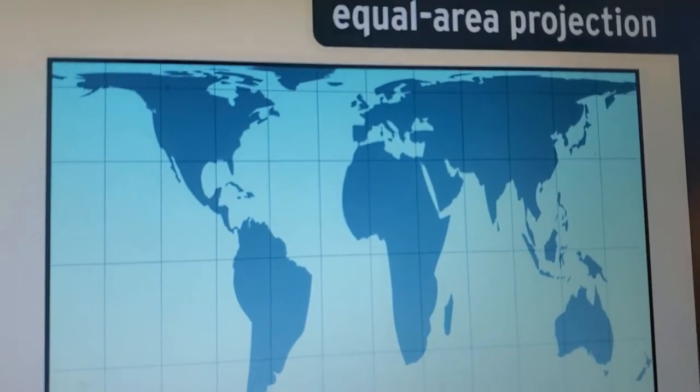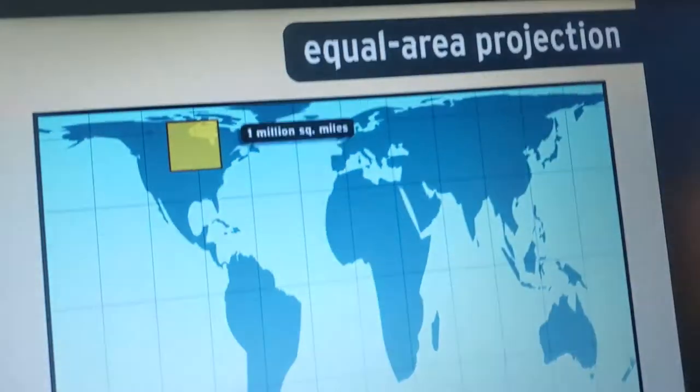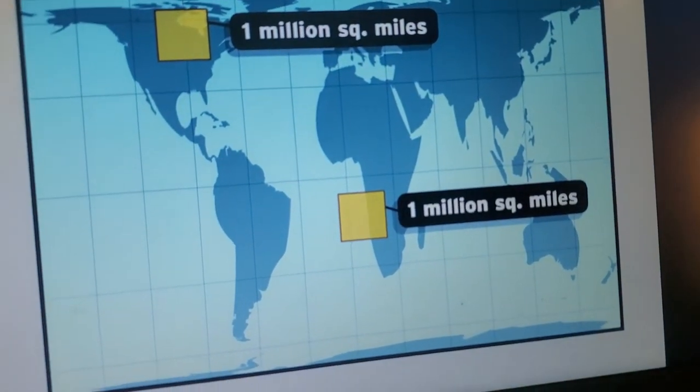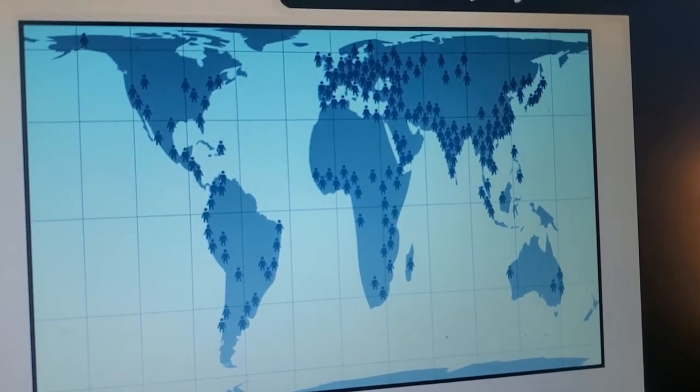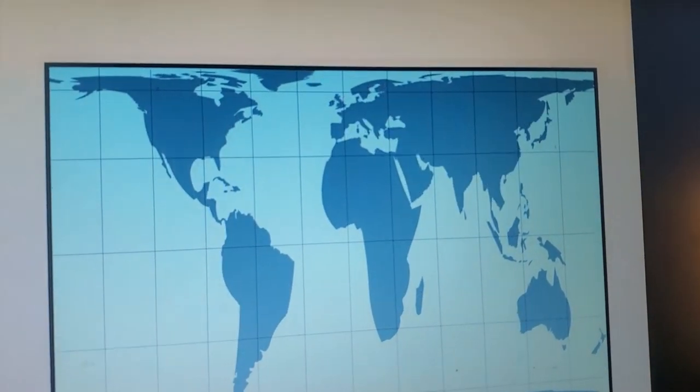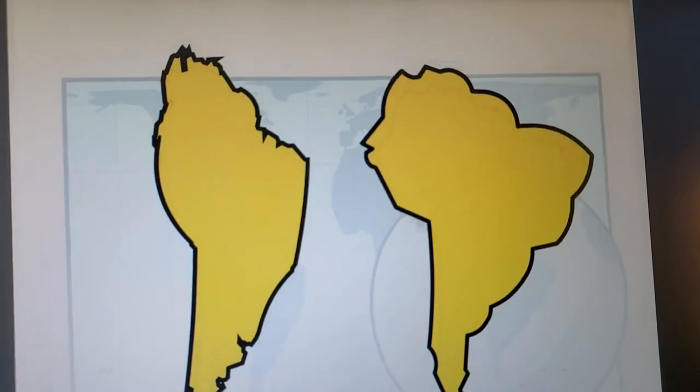Equal area projections preserve size. Every square inch represents the same area of land or water. So these kinds of maps are great for showing things like population density. The trade-off is the shapes of land masses end up very distorted.